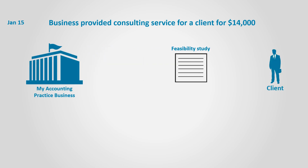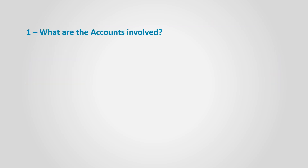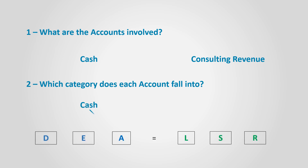On January 15th, the business provided consulting services to a client for $14,000. To analyze the transaction, we ask ourselves the usual five questions. What are the accounts involved? Since the business received cash, the cash account is involved. It received cash because it provided consulting services, and that is revenue, so the consulting revenues account is involved. Which category does each account fall into? Cash falls in the assets category and consulting revenues falls in the revenue category.